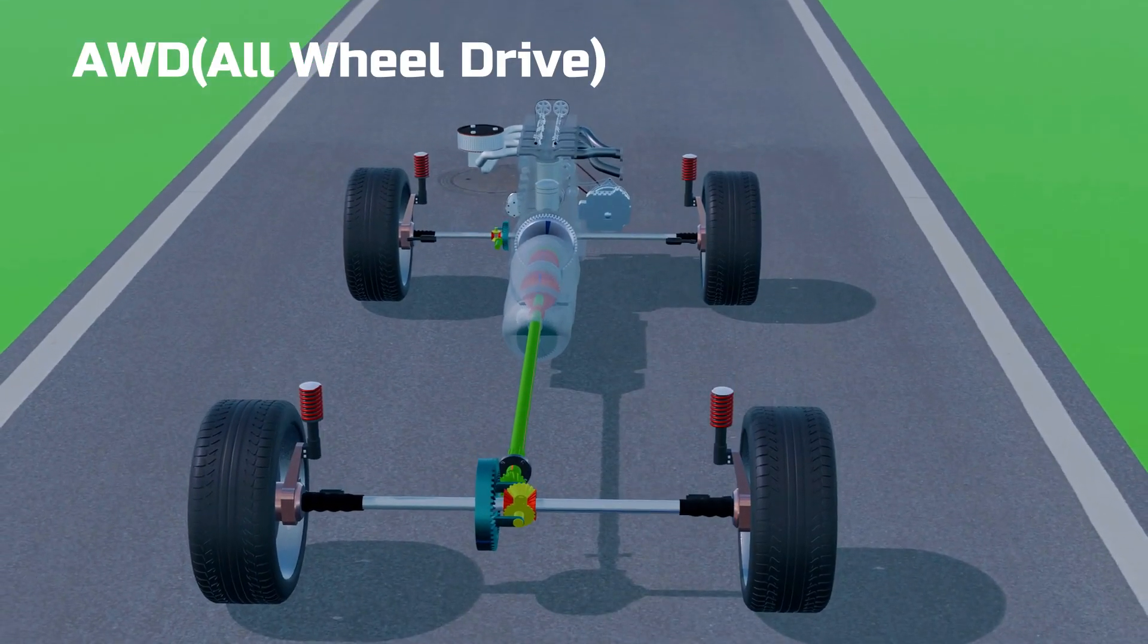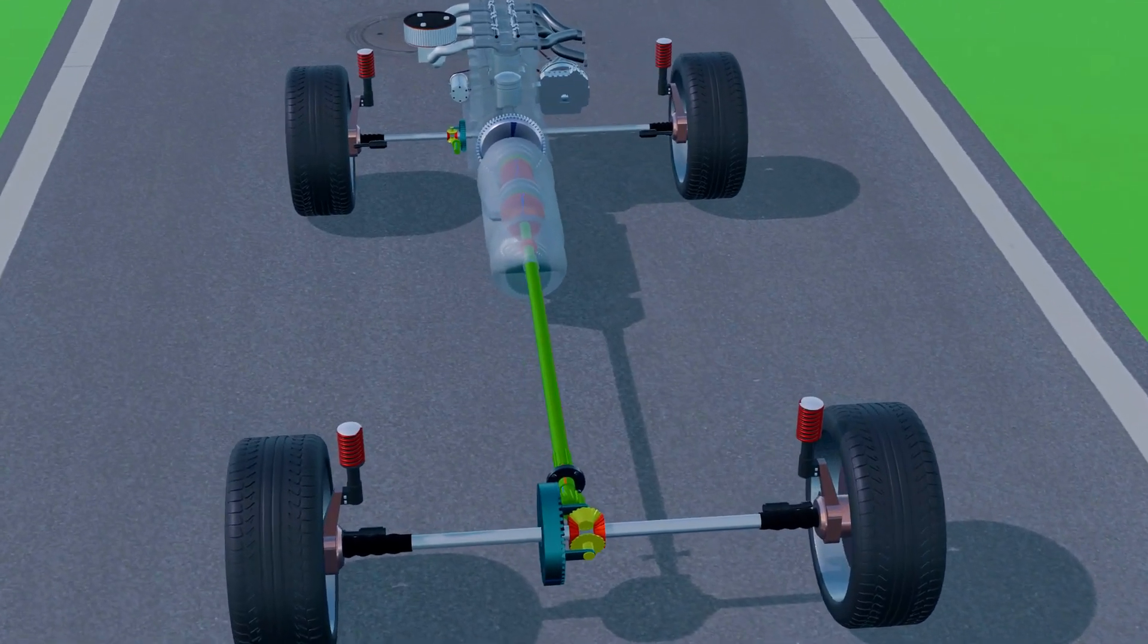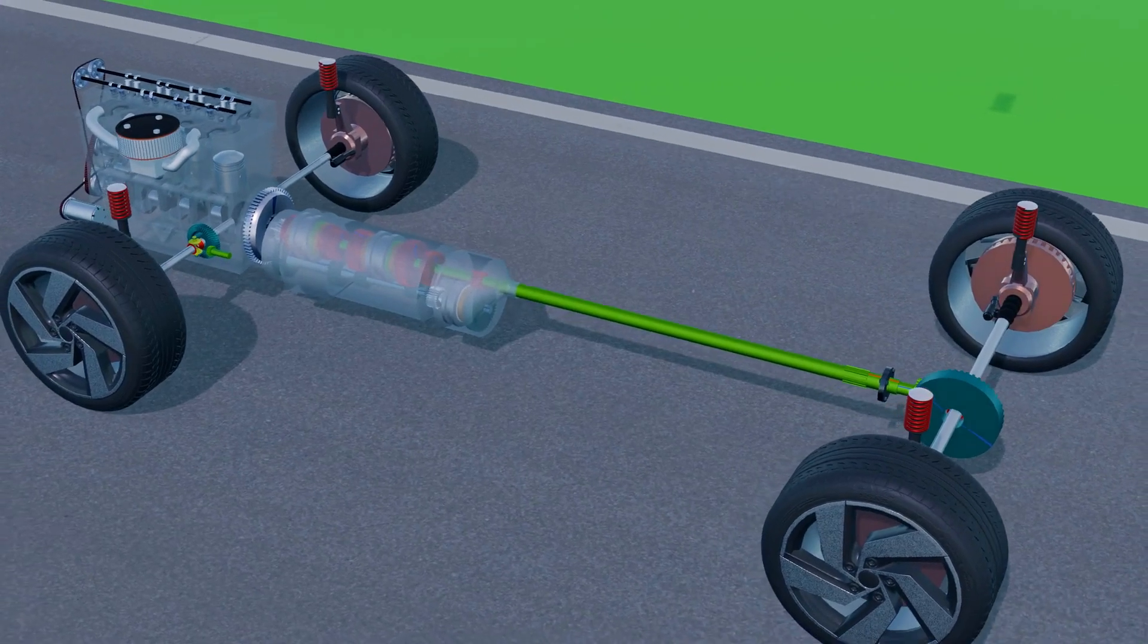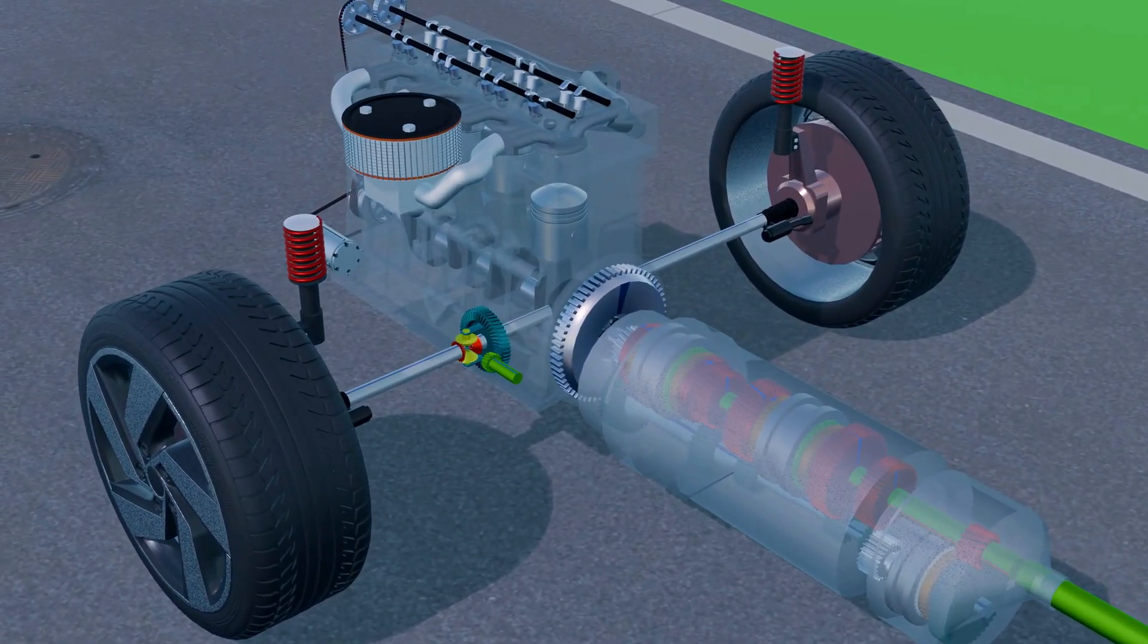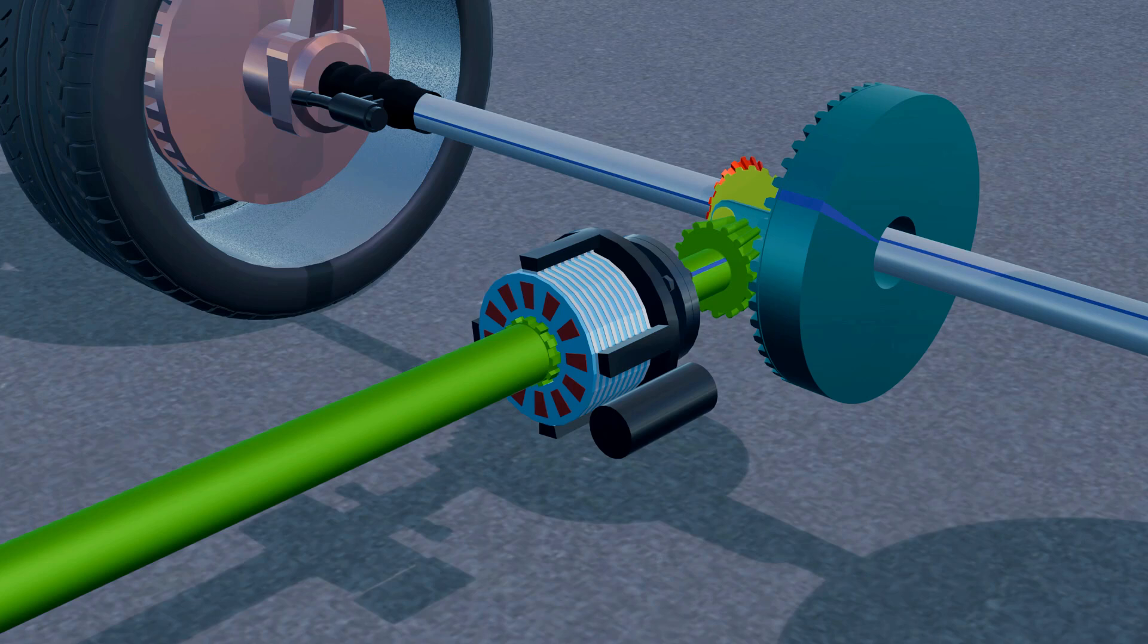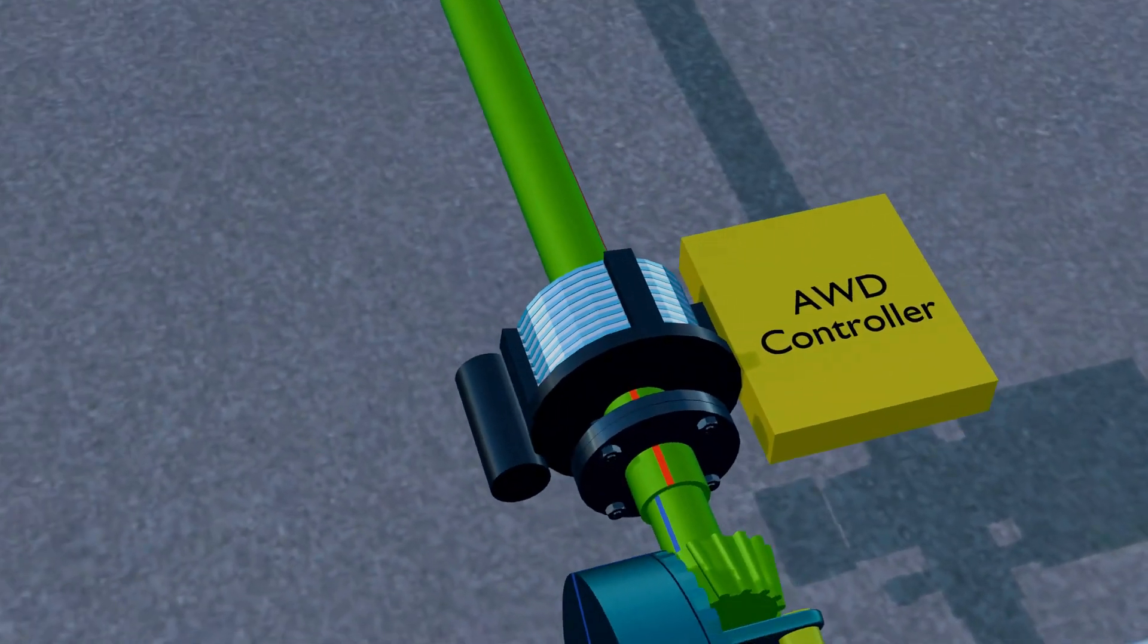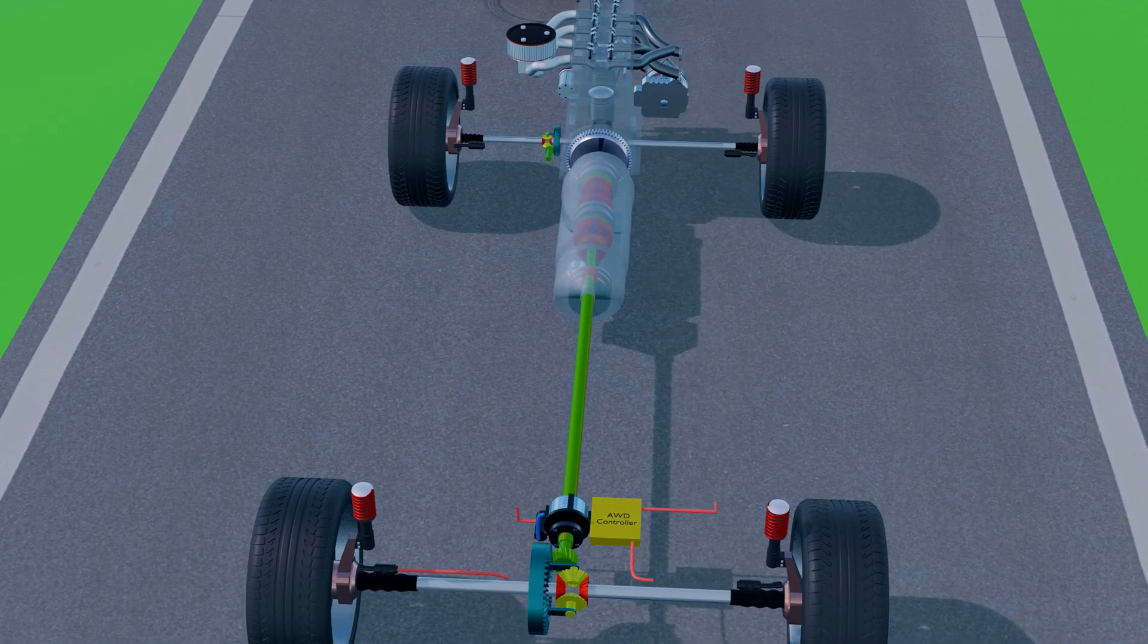AWD doesn't rely on modes like 2H or 4H. It's an intelligent system that automatically manages traction and distributes power based on real-time driving conditions. There's no transfer case involved here. Power is sent directly to the front wheels through a transaxle while the rear wheels receive power via a propeller shaft. A clutch pack is installed on the rear axle, controlled by an electronic control unit or ECU. This ECU is connected to speed sensors on each wheel, constantly monitoring their rotation.